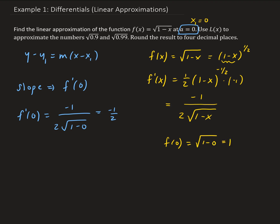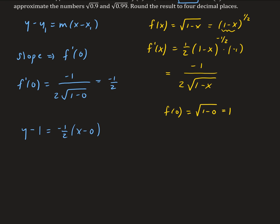So we have y minus 1 equals negative one half times x minus 0. This simplifies to give us y equals negative one half x plus 1. So this is our linear approximation, which we're calling L of x.